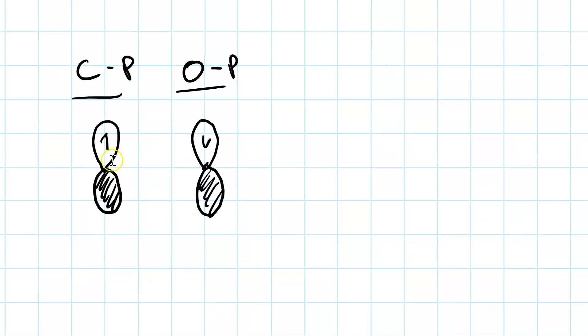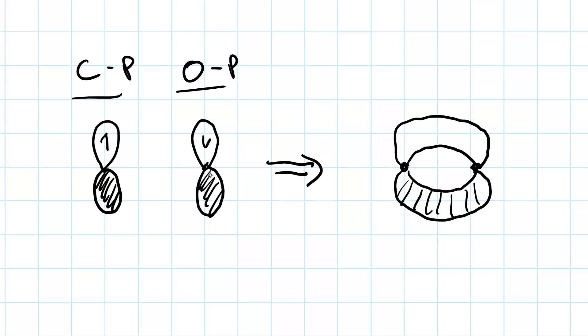If we have a carbon p orbital with one electron in it, and an oxygen p orbital with one electron in it, we bring those two together. Here is your carbon nucleus, and here is your oxygen nucleus, and here is one lobe of electron density, and here is the other lobe of electron density, shaded because it's in opposite phase.